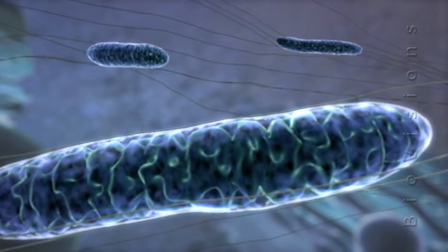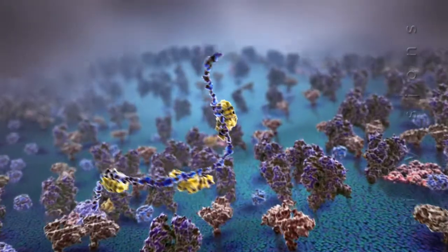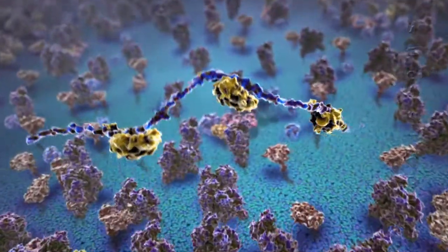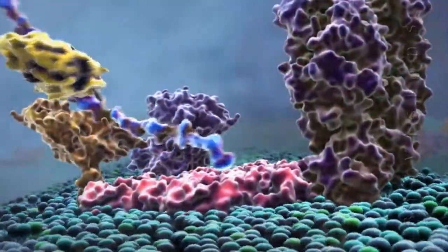Most mitochondrial proteins are transported from the cytosol into mitochondria through specialized protein translocator complexes. Interactions between these complexes bring the outer and inner mitochondrial membranes into close proximity.